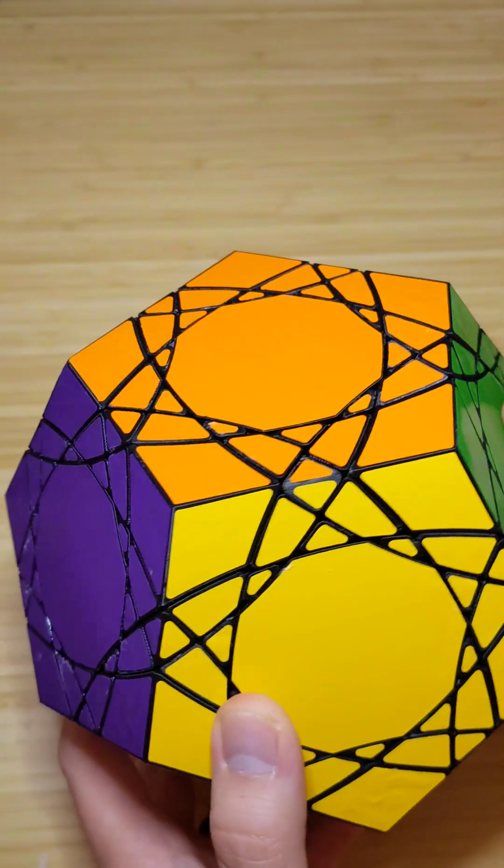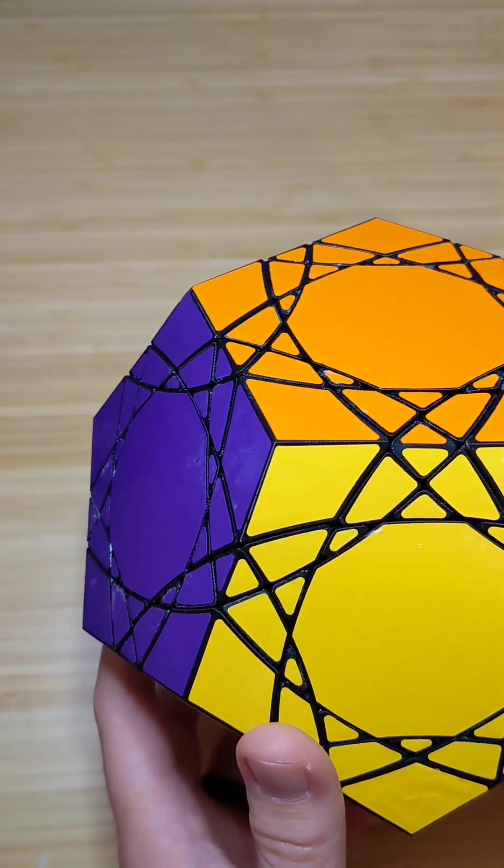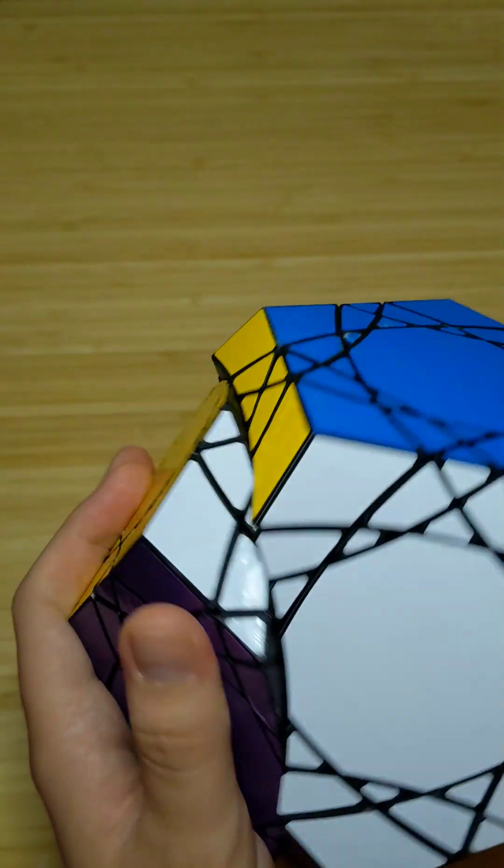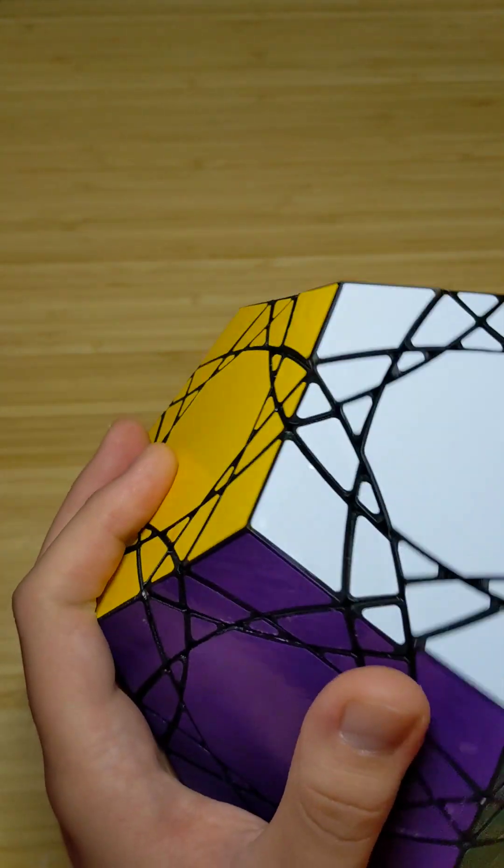I ended up printing the whole thing roughly twice to get the placement of gaps between layers right, because initially it was way too loose to even turn. And now it's pretty snug.